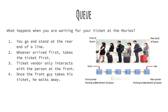There are a few properties of a queue. First, you go and stand at the end of the line. Whoever arrived first would be getting the ticket first. The ticket vendor only interacts with the person at the front, and once the front person takes their ticket, they go away and the queue proceeds.